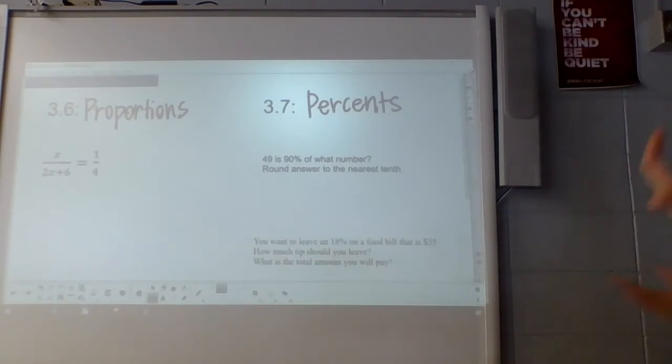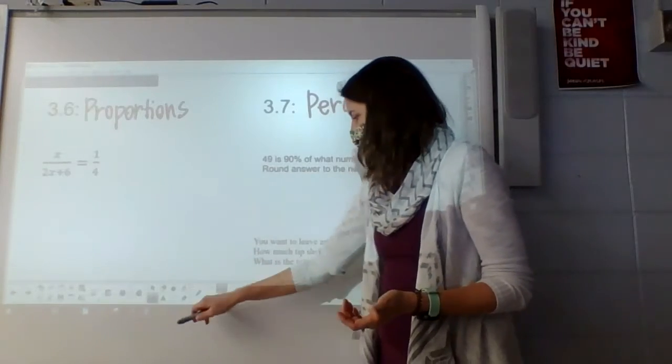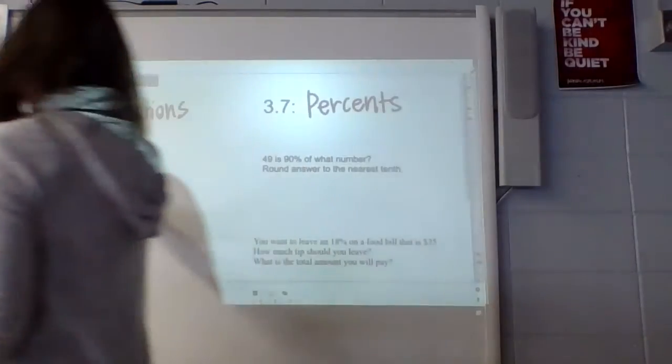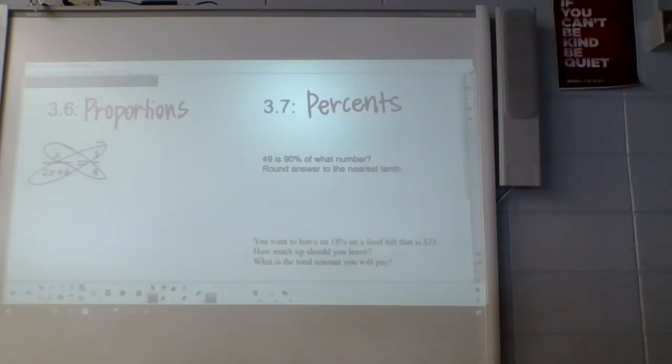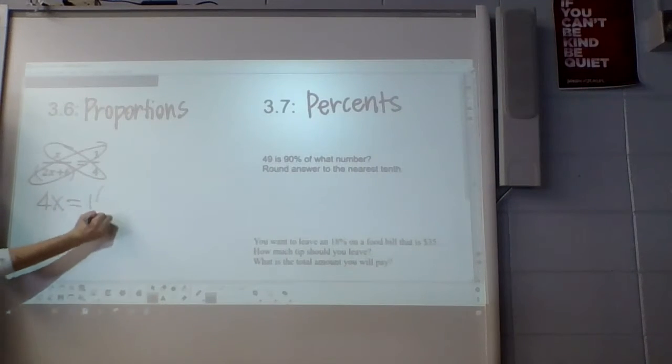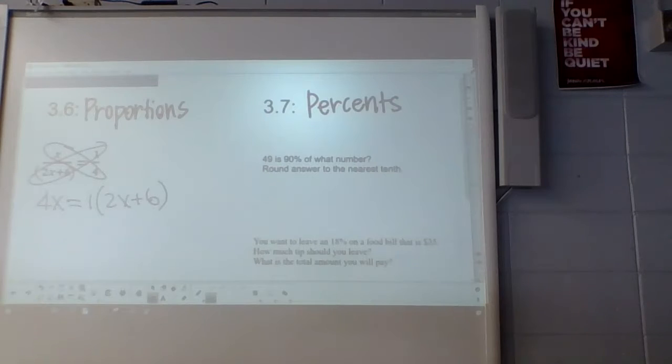So just to remind you guys, with proportions, when you see a fraction equaling a fraction, this is where we want to cross multiply. A lot of times you're going to want to use parentheses. This isn't a great example because you probably don't really need parentheses in this case, but since there's two terms there, I put parentheses around them. So I get 4x equals 1 times 2x plus 6. You don't really need parentheses in that case, but just to remind you that you might, because distributing a 1 and nothing really happens.